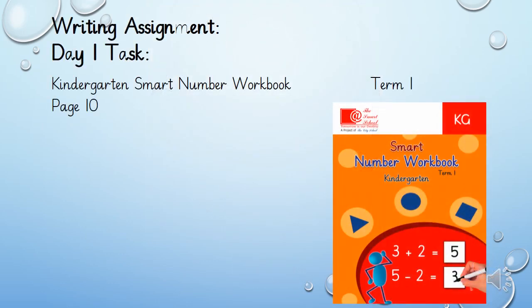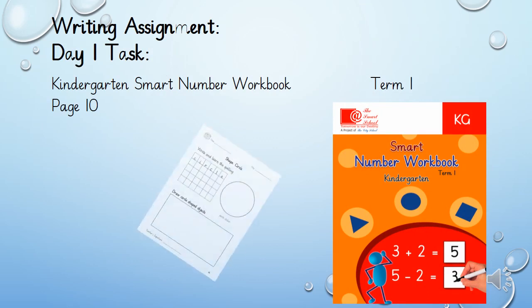For the Day 1 writing assignment, take out your smart number workbook and open page number 10. On this page, you have to write and learn the spelling of circle. Draw circle-shaped objects and paste the circle sticker, which you can find at the end of the workbook.